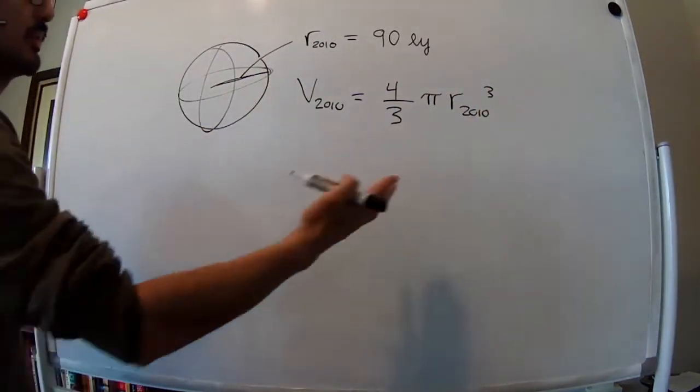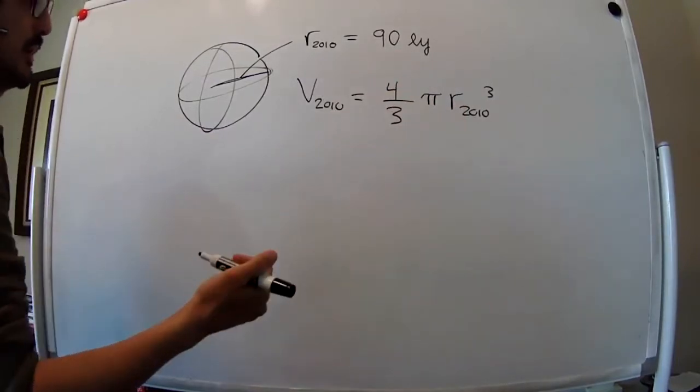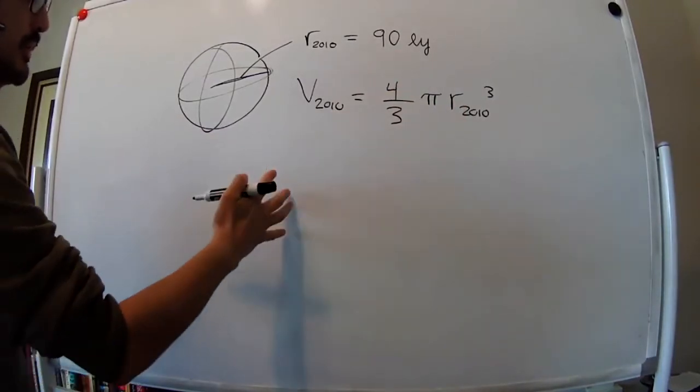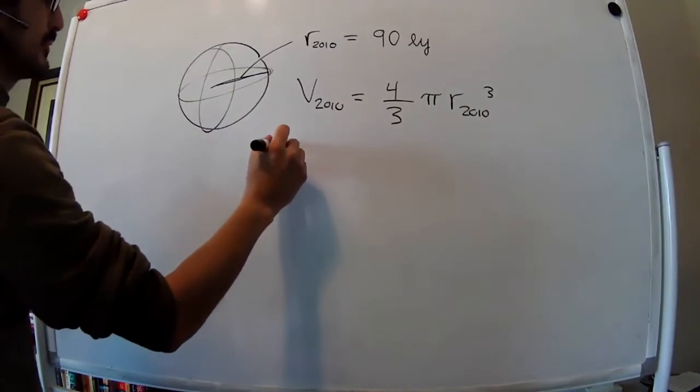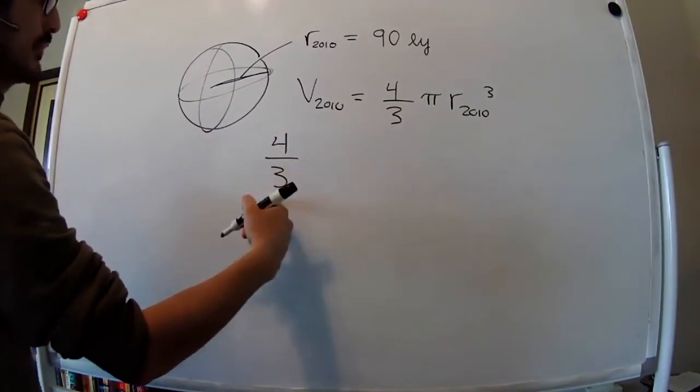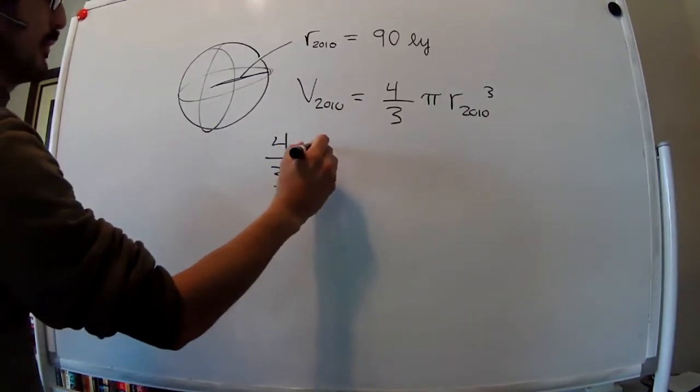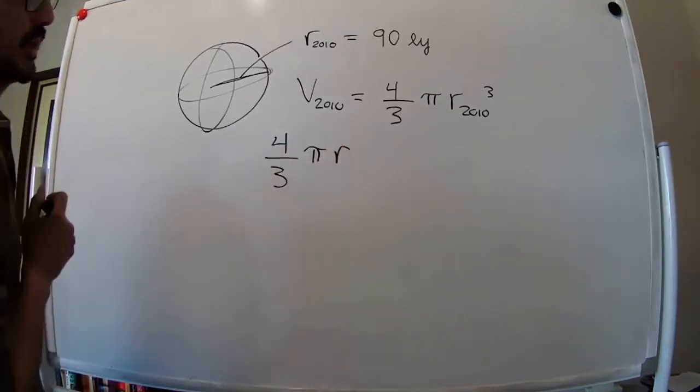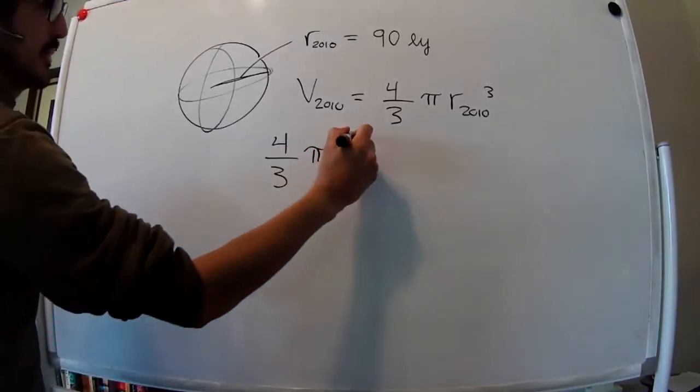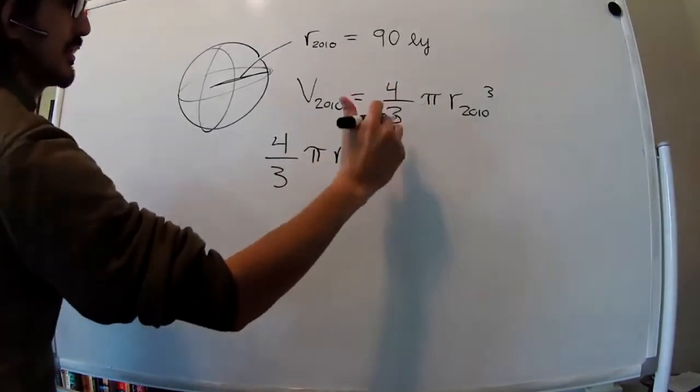And we want to know what is the radius when this volume is 100 times greater. So the volume of the sphere is going to be 4/3 π times this new radius I'm going to mark that we're interested in, cubed.